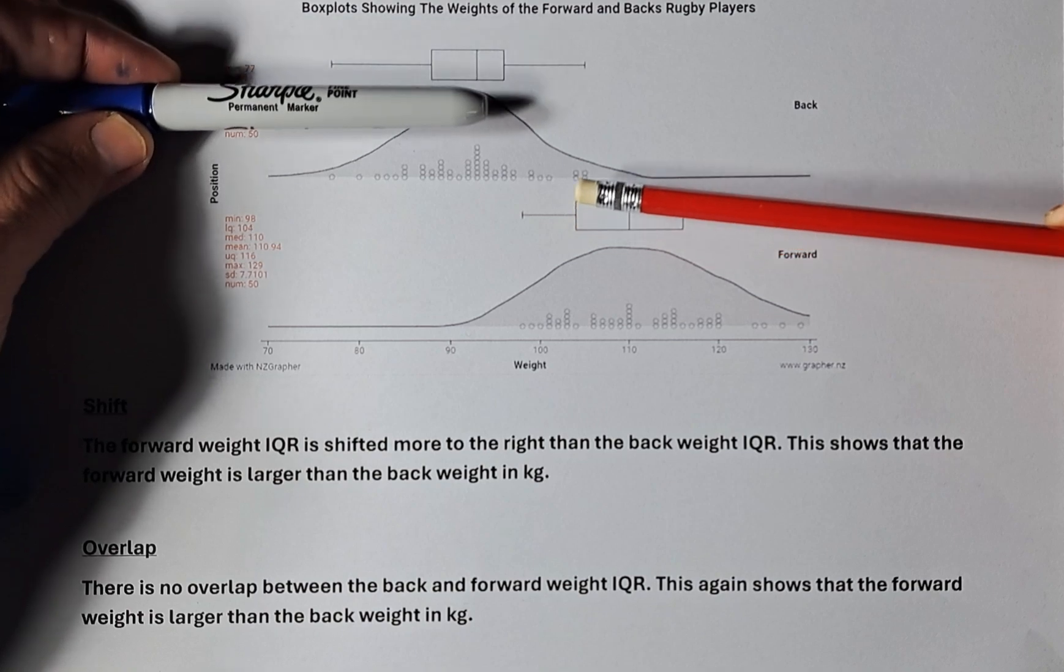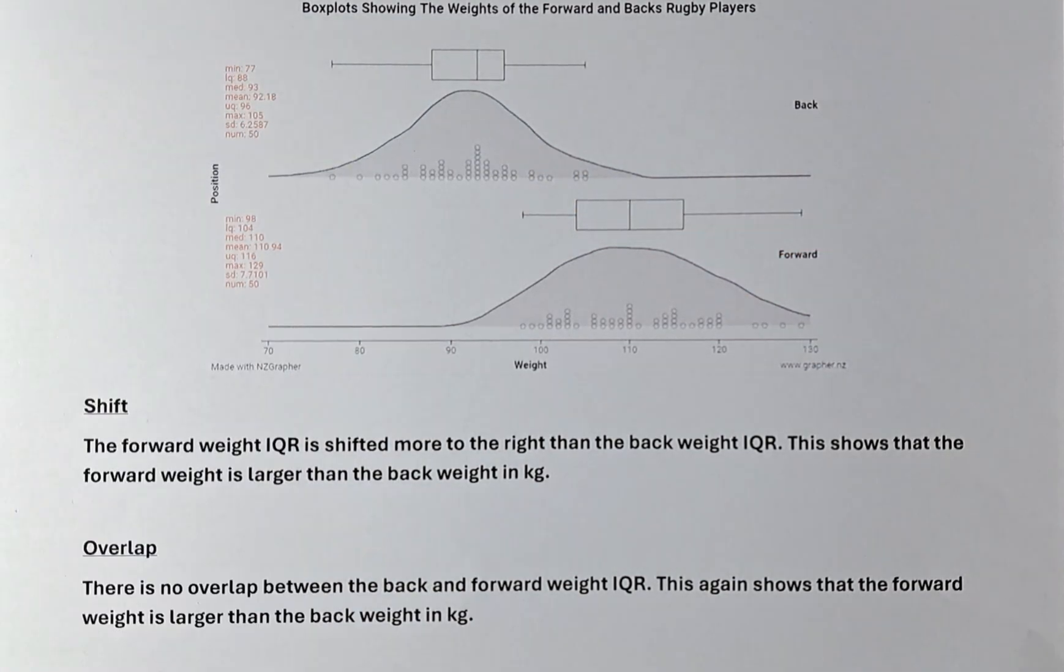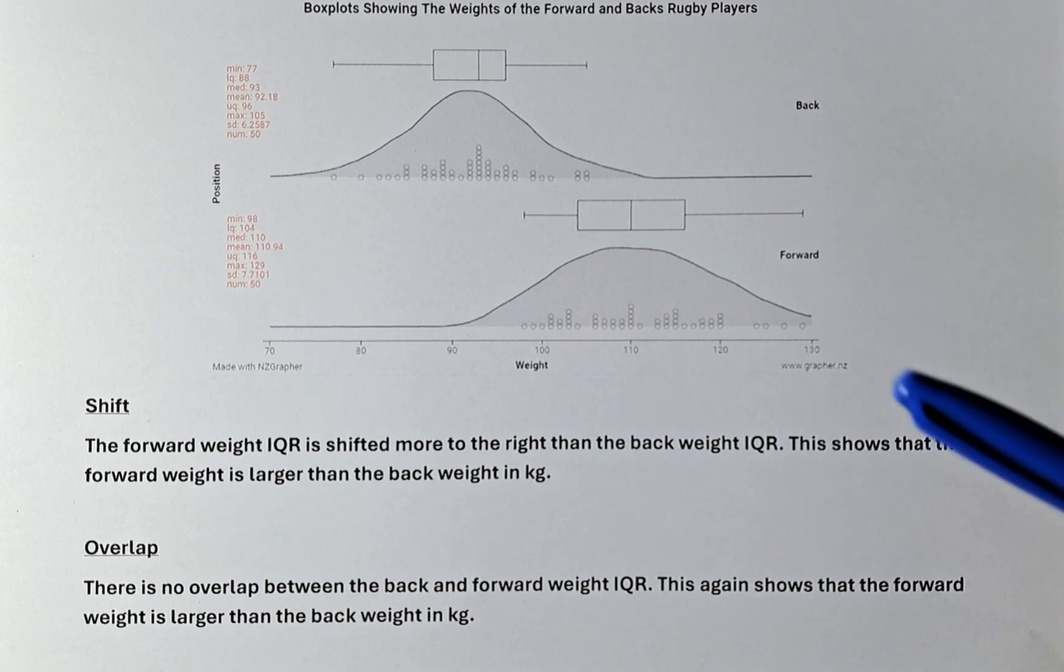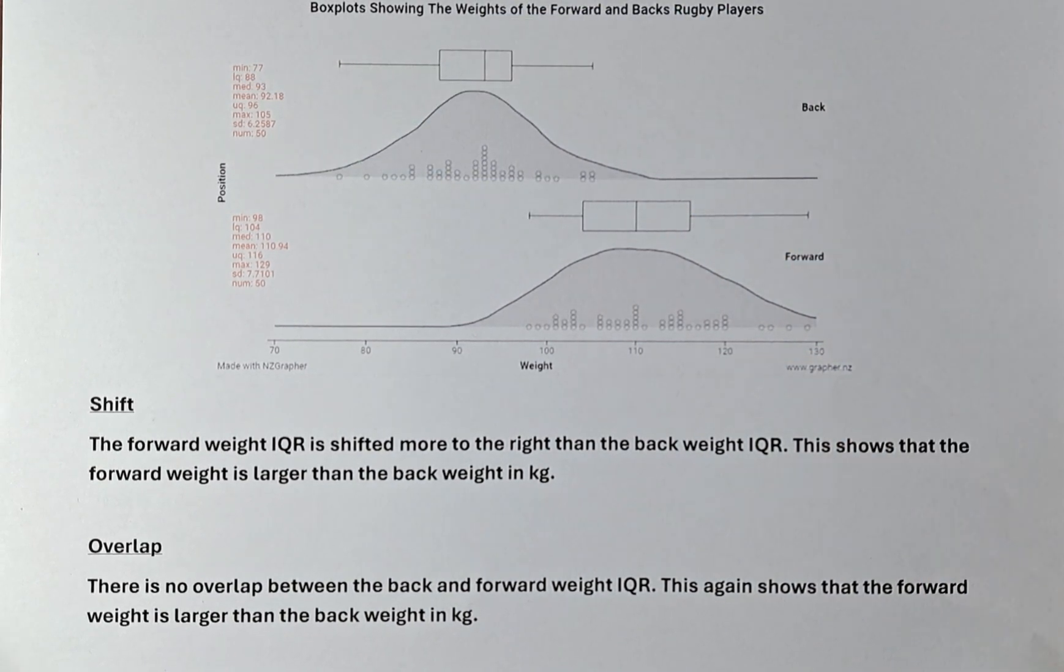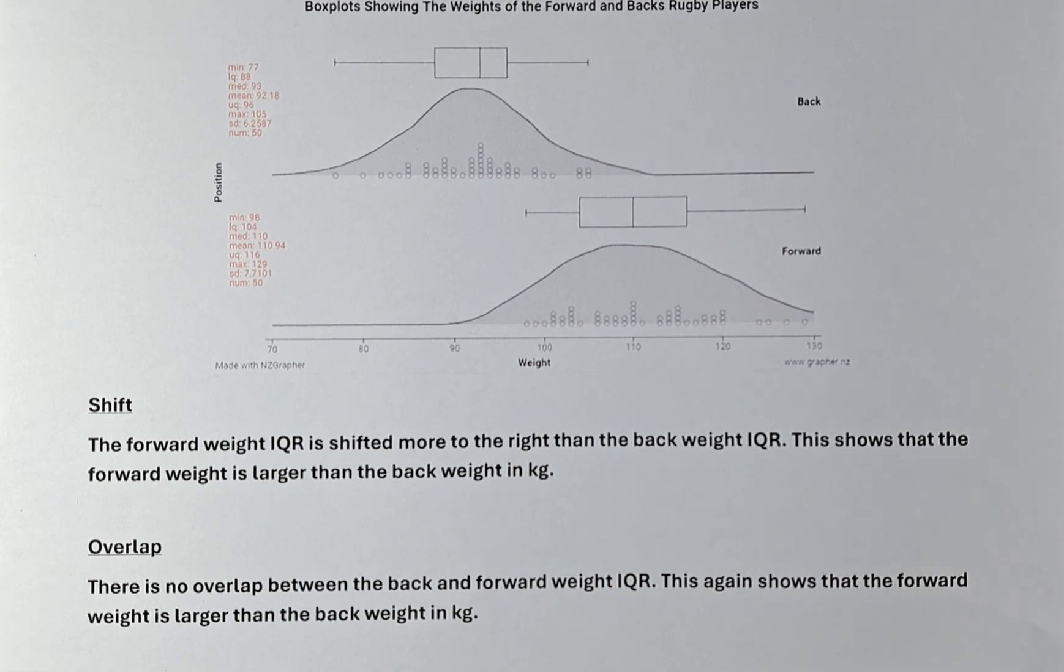This is the two IQR. If you bring it up together, there is no overlap. So, if there is no overlap, this clearly shows that the forward weight is heavier than the back weight. We are going to answer that there is no overlap between the back and the forward IQR.